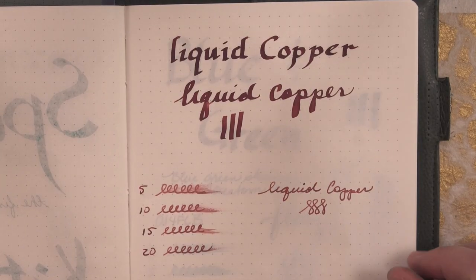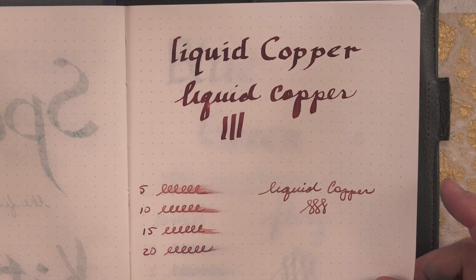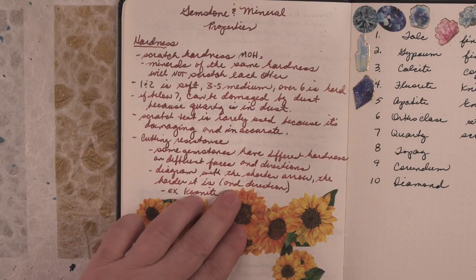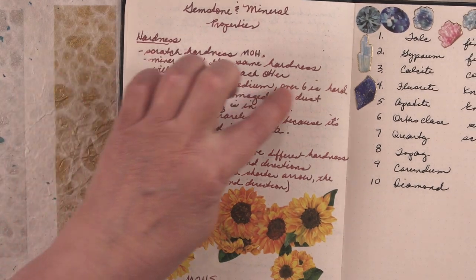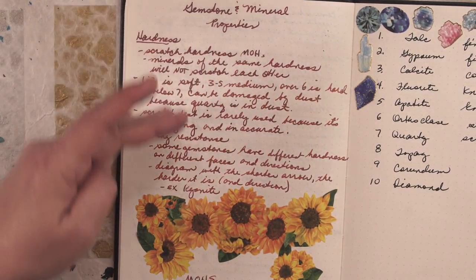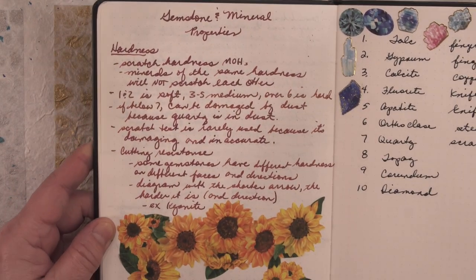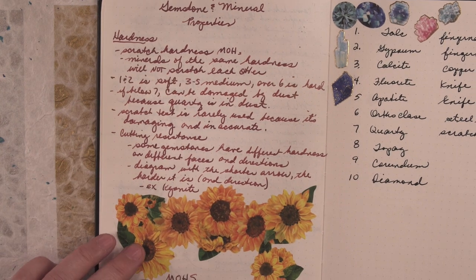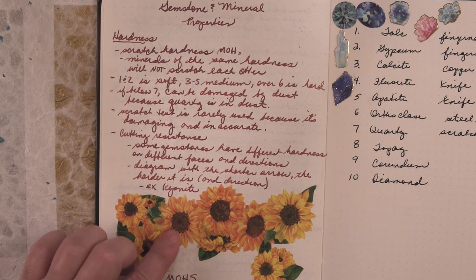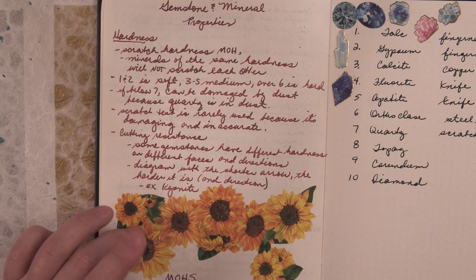Here's what it looks like with the Pilot Parallel 2.4. This was written with a medium nib, and the shimmer showed up right there the most. As you can see, there's a bunch of stickers on the bottom here. That's my way of covering up mistakes that I made.